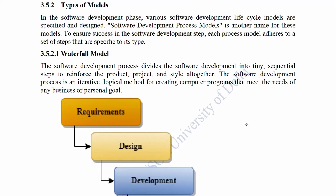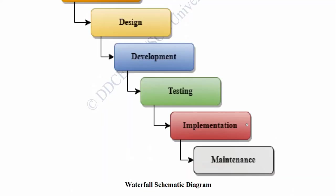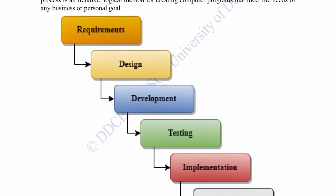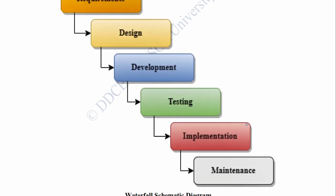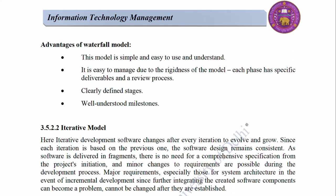3.5.2.1 Waterfall Model: The software development process divides the software development into tiny sequential steps to reinforce the product, project, and style all together. The waterfall schematic diagram flows through: Requirements, Design, Development, Testing, Implementation, and Maintenance. Advantages of the Waterfall Model: This model is simple and easy to use and understand. It is easy to manage due to the rigidness of the model. Each phase has specific deliverables and a review process. Clearly defined stages and well-understood milestones.